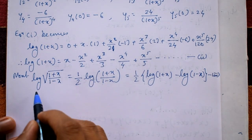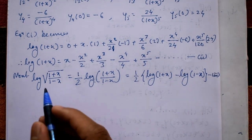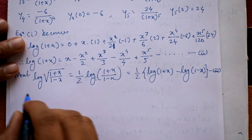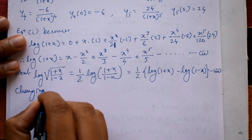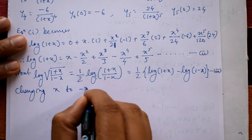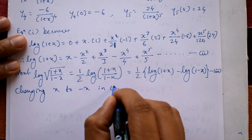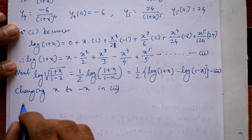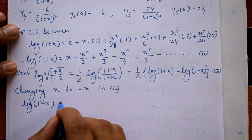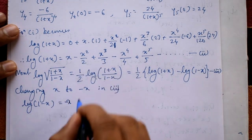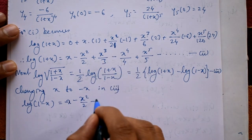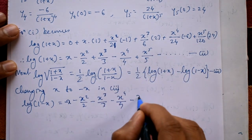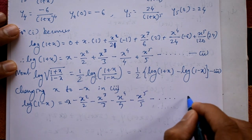We already have log(1+x). To get log(1-x), simply replace x with −x in equation number 2. This gives: log(1−x) = −x − x²/2 − x³/3 − x⁴/4 − x⁵/5 − ... This is equation number 4.